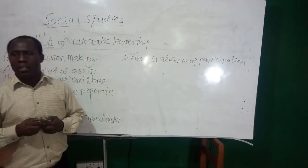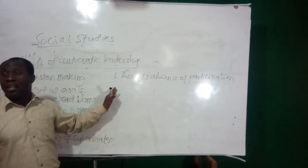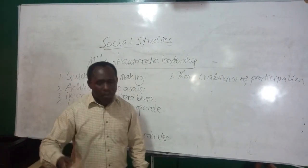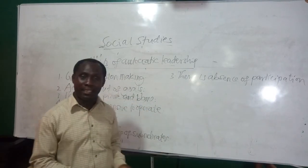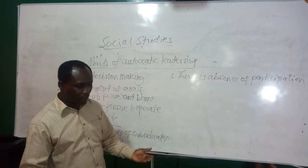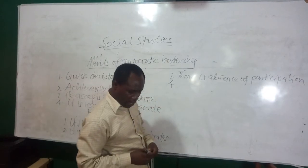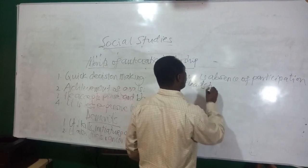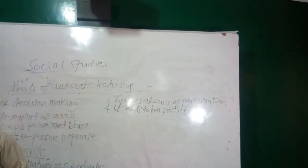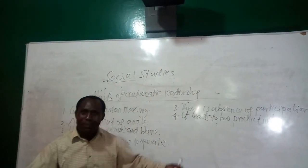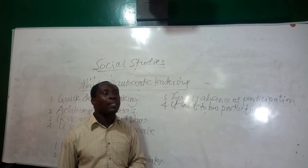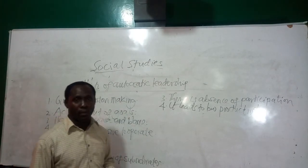There is also absence of participation — members do not participate in anything. They only look on, and even when they may know the leader's decision is wrong, they are not given a chance to contribute. Finally, it leads to low productivity: when the leader is present, workers pretend to be working, but when he is not there, they don't produce. This is one of the very negative effects of autocratic leadership.